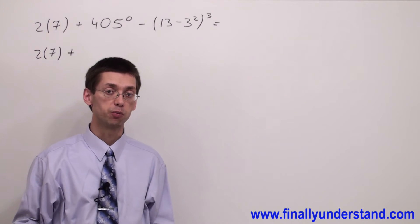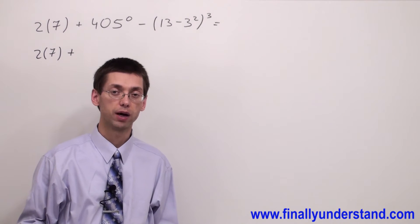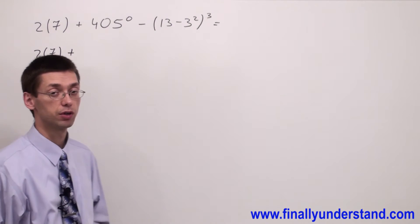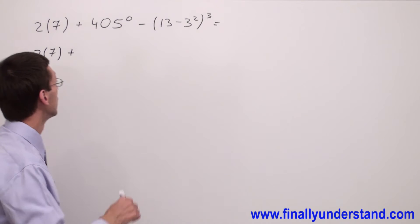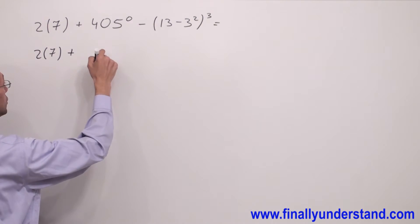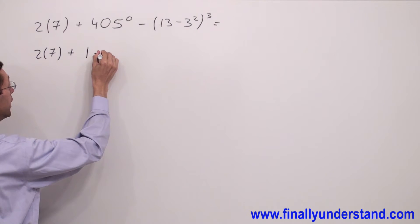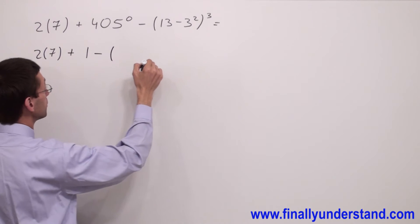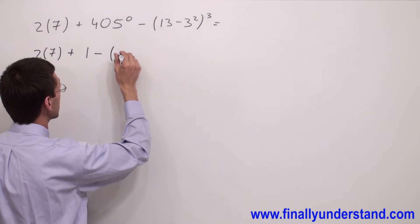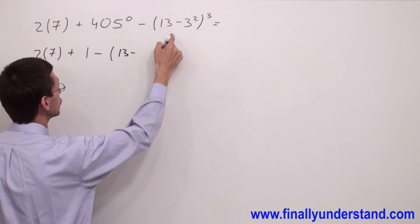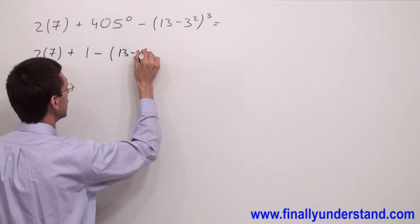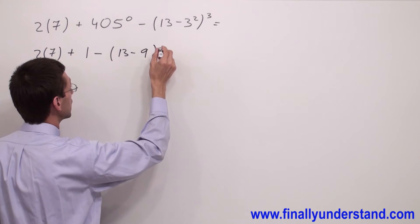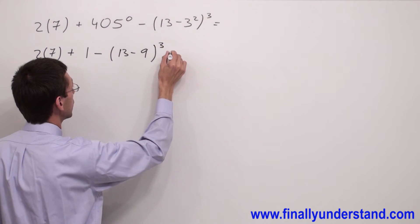Any number besides 0 raised to power 0 is equal to 1. 405 is different than 0, that's why 405 raised to power 0 is equal to 1. Next I have to perform the remaining powers: 3 to the second power is equal to 9, and the parenthesis is raised to power 3.